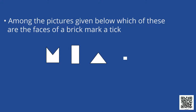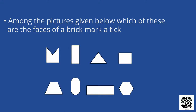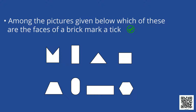Among the pictures given below, which of these are the faces of a brick? Mark a tick or a correct sign. Carefully look at this picture — is it the first, second, third, fourth, or sixth? Which image is near to the face of a brick? Put the correct sign in front of the correct image. We can see that out of the given six images, three images represent the faces of a brick.